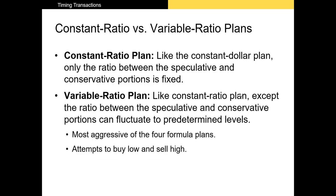Two other formula plans are the constant ratio plan and the variable ratio plan. These are fairly similar — there's really only one quirk that makes them different. With both, you're essentially adjusting the ratio between the speculative and conservative portions. With the constant ratio plan, you're setting it back to the initial value, whereas with the variable ratio plan, you just want it within some range.